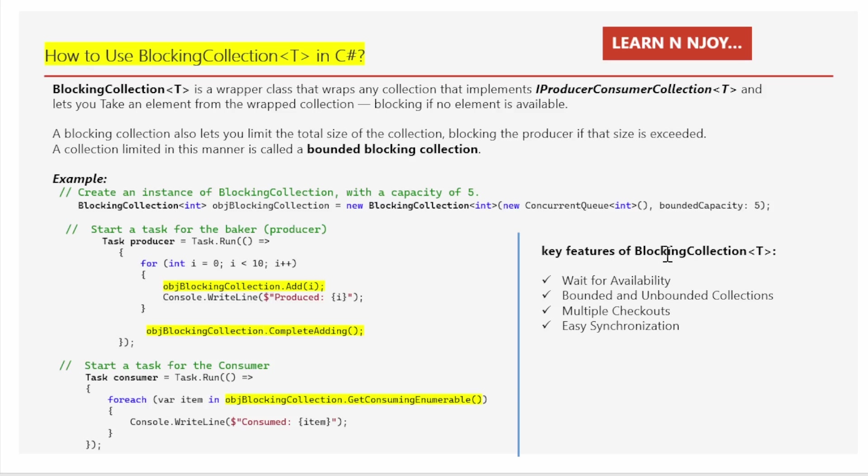Now let's talk about the key features of BlockingCollection<T>. Number one: wait for availability. If you try to take an item from the collection and it's empty, BlockingCollection<T> makes you wait until something is available. This is useful in scenarios where you know something will eventually show up and you want to wait for it.